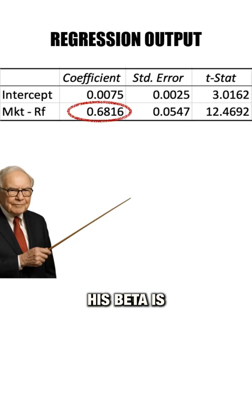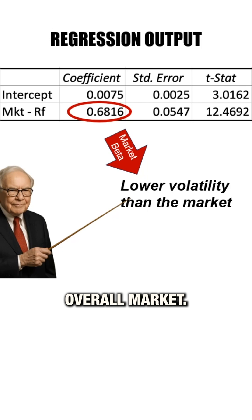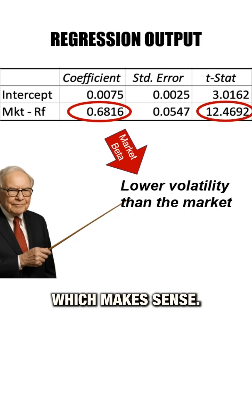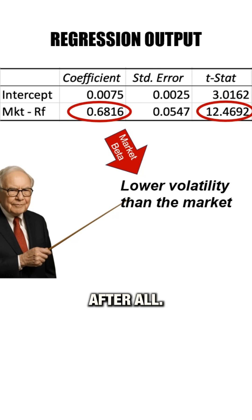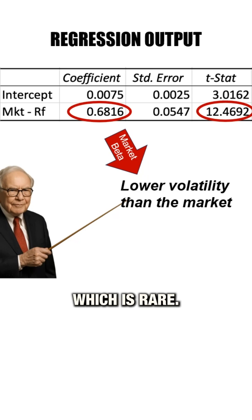His beta is under 1, which suggests he did all this with less volatility than the overall market, and the t-stat on beta is a whopping 12, which makes sense — Berkshire is a stock portfolio after all. The data show Buffett didn't just beat the market; he did it with less risk, which is rare.